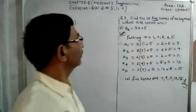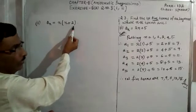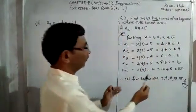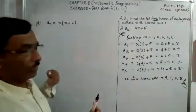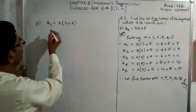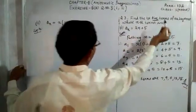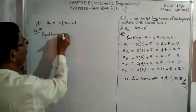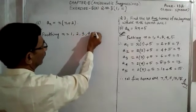Moving to question number 3, sub number 2. aₙ is equal to n(n + 2). I'll work the right-hand side first so that the board is not blocked by my body. Same way, we take the solution. We have to find the first 5 terms, so we will put n equal to 1, 2, 3, 4, 5.